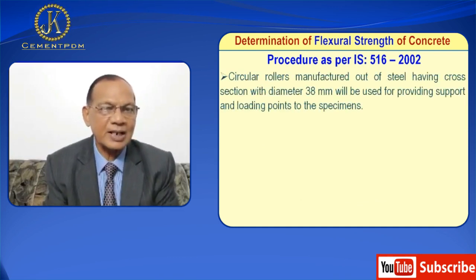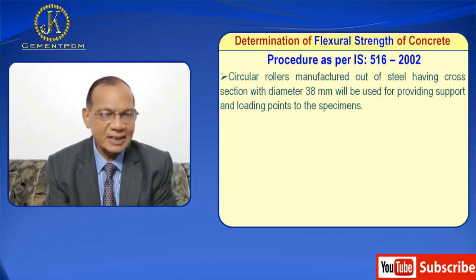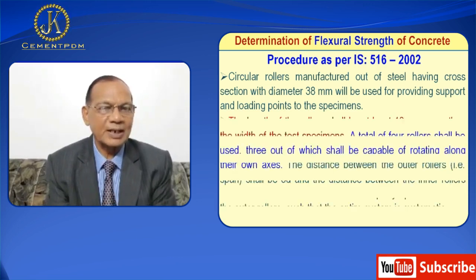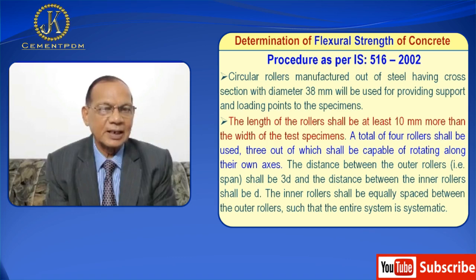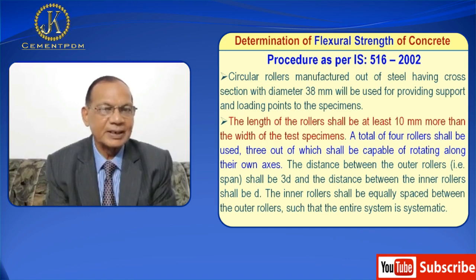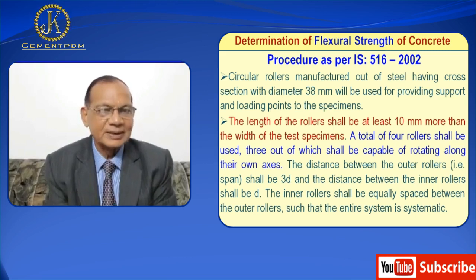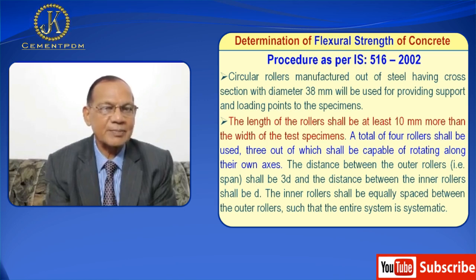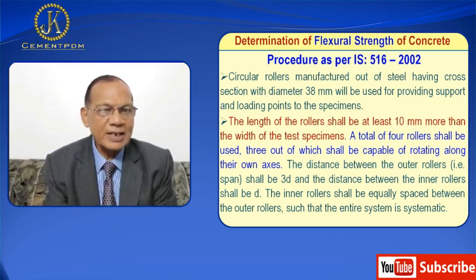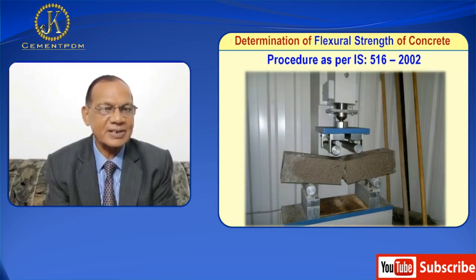Circular rollers manufactured out of steel having a cross section with diameter 38 mm will be used for providing support and loading points to the specimen. The length of the rollers shall be at least 10 mm more than the width of the specimen. The distance between the outer rollers (span) shall be 3D, and the distance between the inner rollers shall be D. The inner rollers shall be equally spaced between the outer rollers such that the entire system is symmetrical.